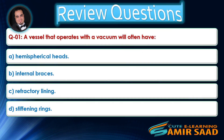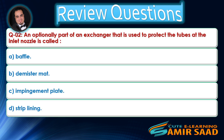Review Questions. Question 1: A vessel that operates with a vacuum will often have — Answer is D. Question 2: An optional part of an exchanger that is used to protect the tubes at the inlet nozzle is called — Answer is C.